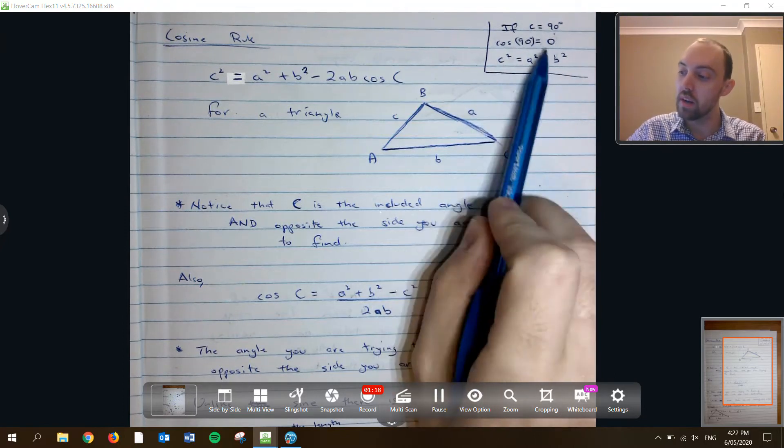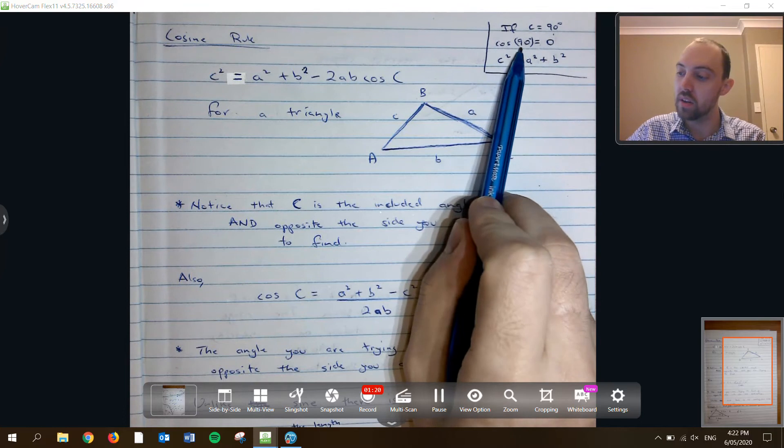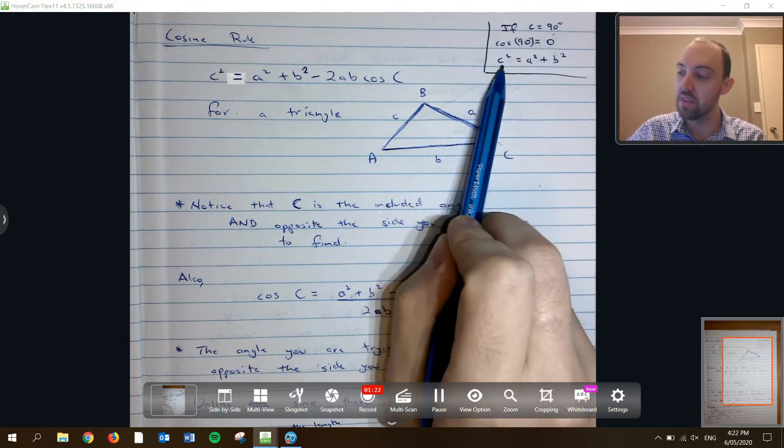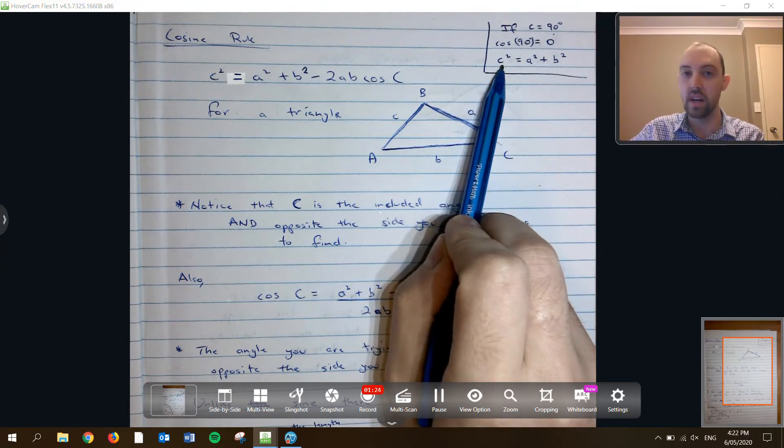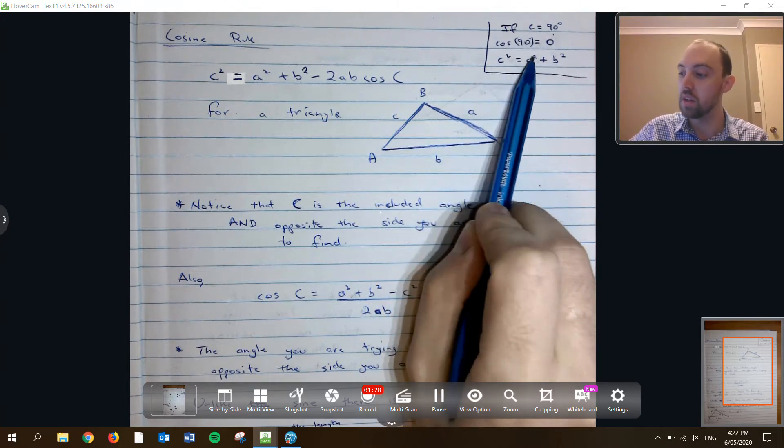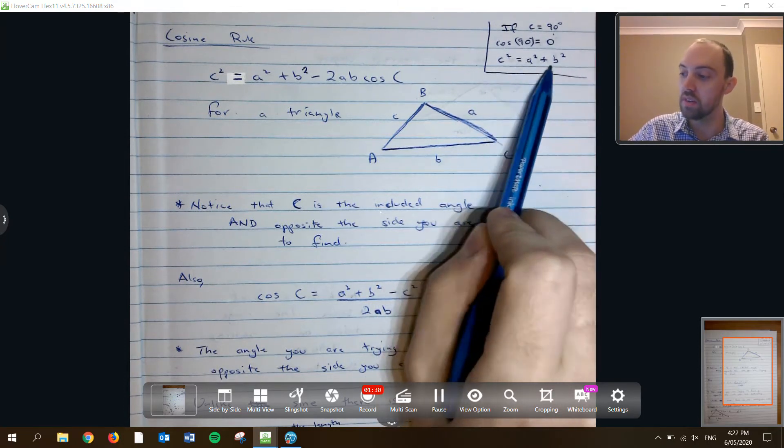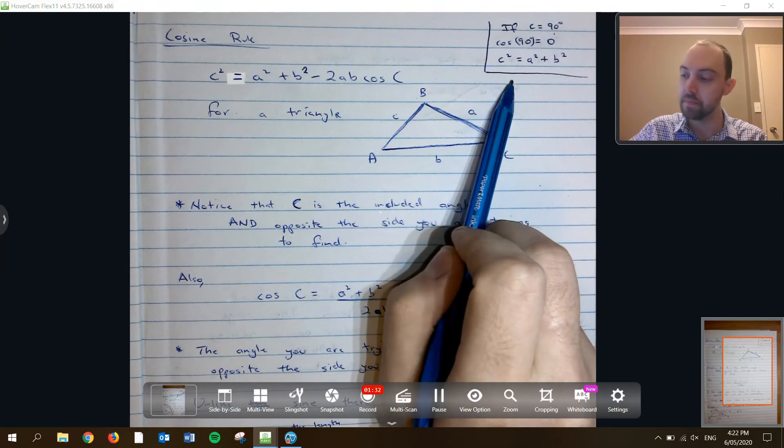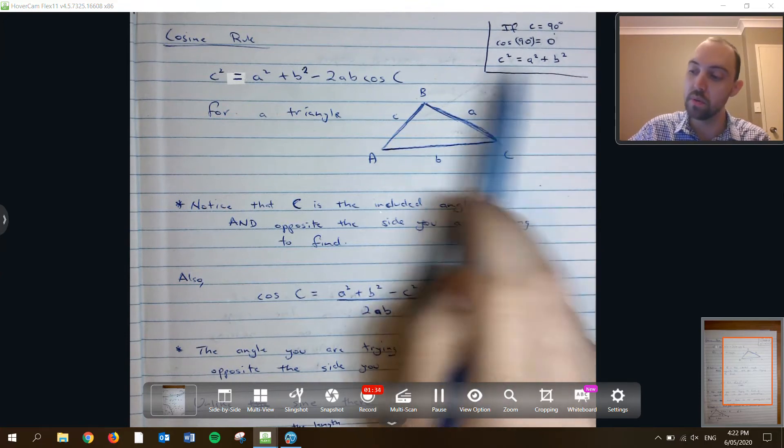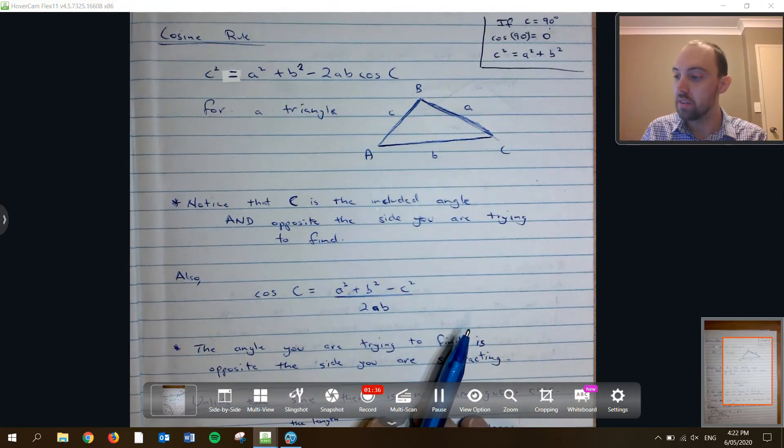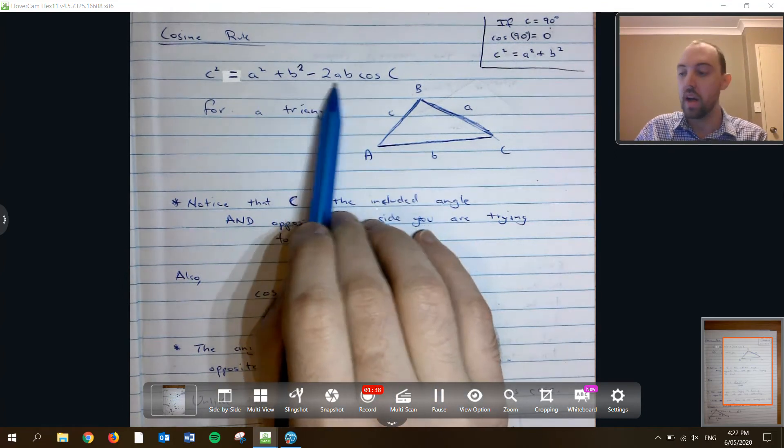So when you have a 90 degree angle, then you've got c opposite that 90 degree angle, being the hypotenuse. Hypotenuse squared is equal to the other two sides, or the sum of the other two sides squared. So a squared plus b squared. So it is Pythagoras' theorem, but it's got this little extra bit.